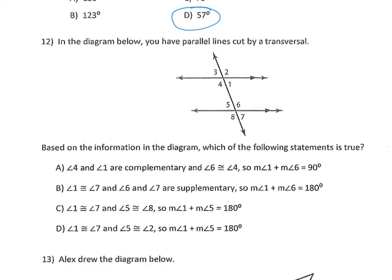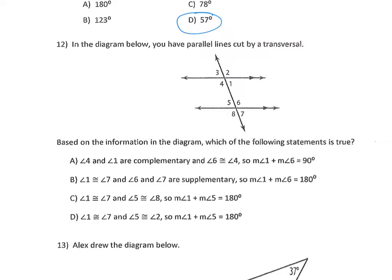Number 12: in the diagram, parallel lines are cut by a transversal. Which statement is true? Answer A says angle 4 and angle 1 are complementary — complementary means they add up to 90 degrees. But angle 4 and angle 1 are on a straight line, so they add up to 180 degrees, not 90. So it can't be A. Answer B says angle 1 and angle 7 are congruent, and angle 6 and angle 7 are supplementary — so angle 1 plus angle 6 equals 180 degrees. That looks true.